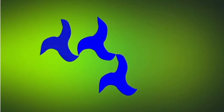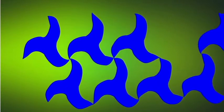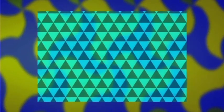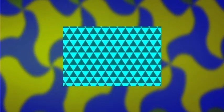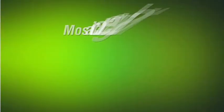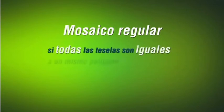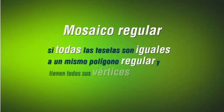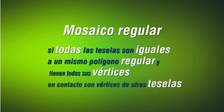Observemos algunas aplicaciones de los polígonos. Se llama mosaico o teselado a todo recubrimiento del plano mediante piezas llamadas teselas, cumpliéndose dos condiciones: no se pueden superponer y no pueden dejar huecos sin cubrir. Un mosaico se llama regular si todas las teselas son iguales a un mismo polígono regular y tienen todos sus vértices en contacto con vértices de otras teselas.